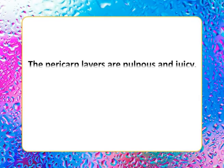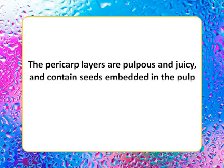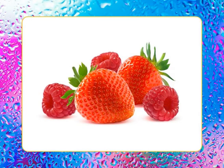Berries are fruits with layers of pericarp, which are often homogenous except for the thickening on the outside. The pericarp layers are pulpous and juicy and contain seeds embedded in the pulp mass. The fruits have a fragile cell structure that is damaged by rough handling or freezing. Examples include strawberry and raspberry.